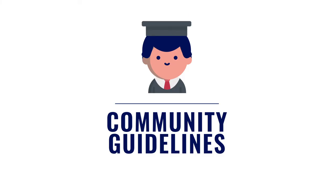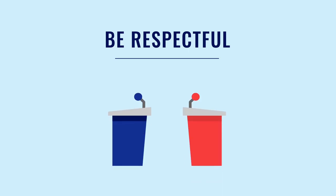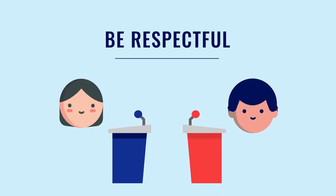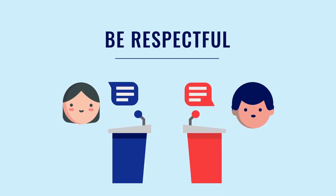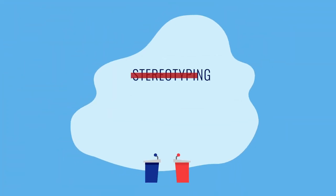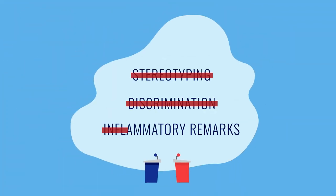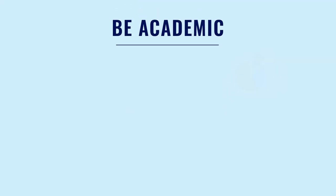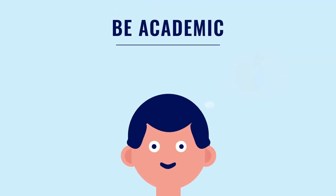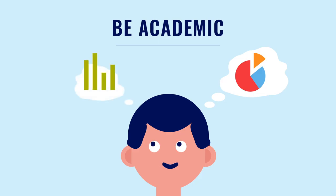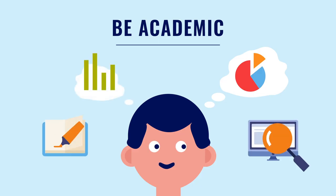Here's how to do that. An academic, informed debate is respectful of each other's arguments using civil discourse. Avoid negativity such as stereotyping, discrimination or inflammatory remarks. Give some thought to your arguments and avoid logical fallacies. Cite evidence such as sources and data to support your arguments.